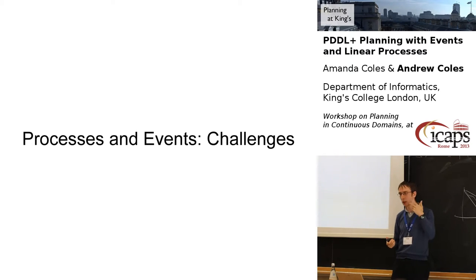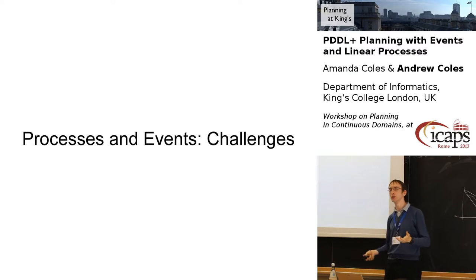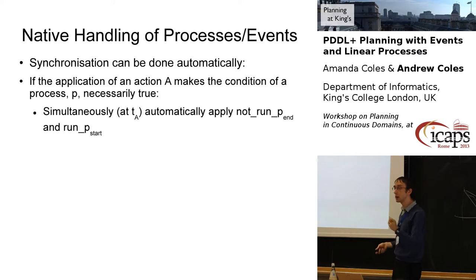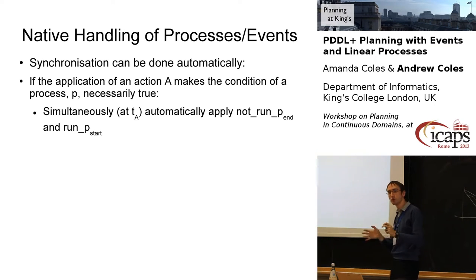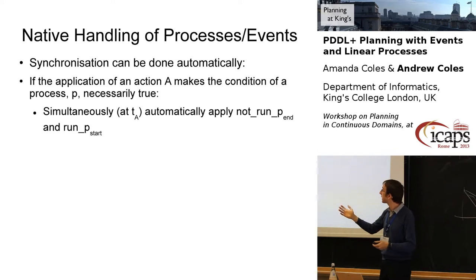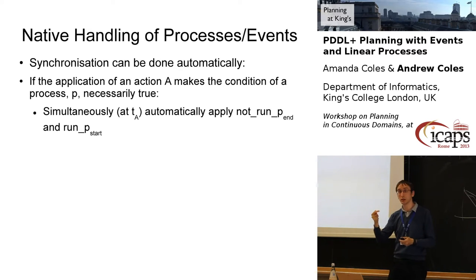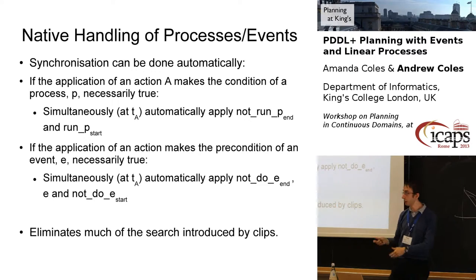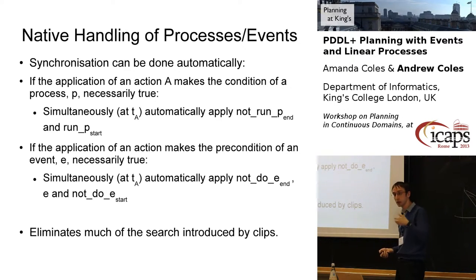Extending this LP-style idea to processes and events, there are a few extra challenges. The nice thing we get from working inside the planner is that in many cases we can completely dispense with explicitly making planning decisions about whether a process switches from running to not running. If we apply an action which makes the condition of the process necessarily true, we can instantaneously do the equivalent of switching from not running that process to running it, synchronized with the action itself — adding variables and constraints to the LP. We get rid of those extra plan steps. Similarly, if we make the conditions for an event true, that event just fires.